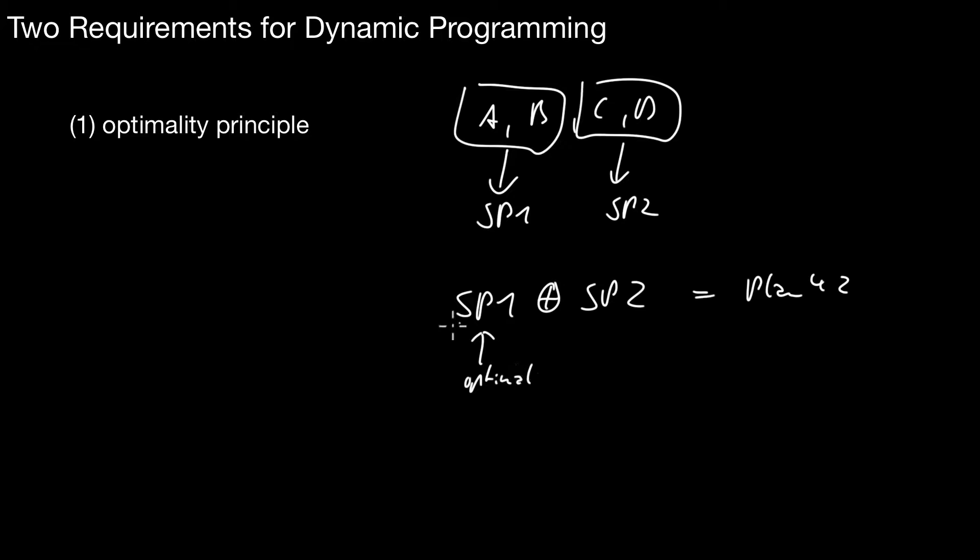So this is a plan for four relations, let's call it plan 42. So optimality principle means that the subplan is optimal. Once you computed that, you know you have an optimal subplan for input relations A and B. You also know that this subplan is optimal with respect to input C and D. And then, from that, you can defer an optimal plan using all four input relations by just combining those two plans.